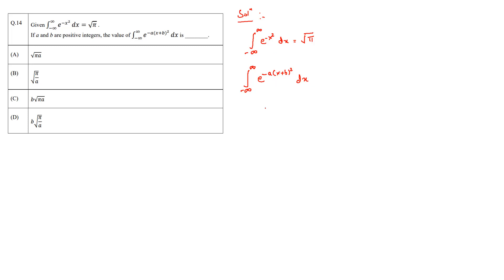So we can make this following substitution saying that let t is equal to root a times x plus b. Now if that is the case then dt becomes root a times dx. This implies that dx is equal to dt over root of a.